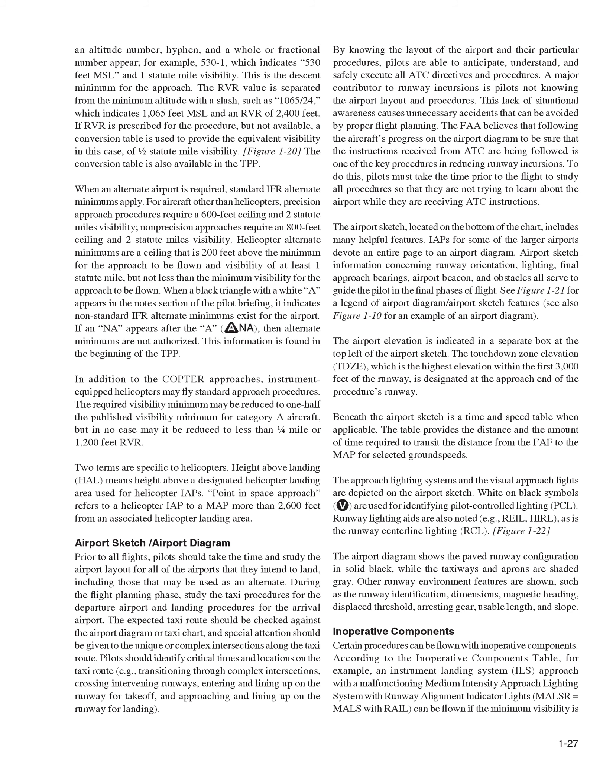The airport elevation is indicated in a separate box at the top left of the airport sketch. The touchdown zone elevation, TDZE, which is the highest elevation within the first 3,000 feet of the runway, is designated at the approach end of the procedures runway. Beneath the airport sketch is a time and speed table when applicable, providing the distance and time required to transit the distance from the FAF to the MAP for selected ground speeds. The approach lighting systems and visual approach lights are depicted on the airport sketch. White-on-black symbols are used for identifying pilot-controlled lighting, PCL. The airport diagram shows the paved runway configuration in solid black, while taxiways and aprons are shaded gray. Other runway environment features shown include runway identification, dimensions, magnetic heading, displaced threshold, arresting gear, usable length, and slope.